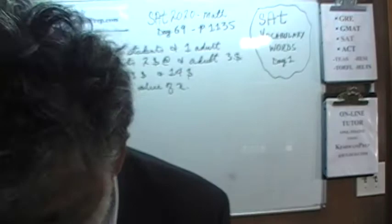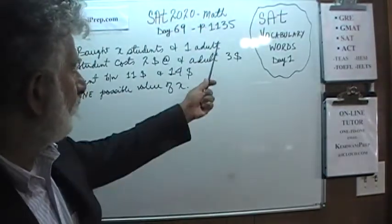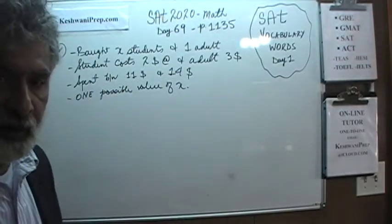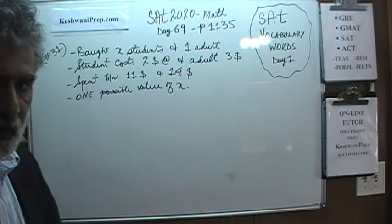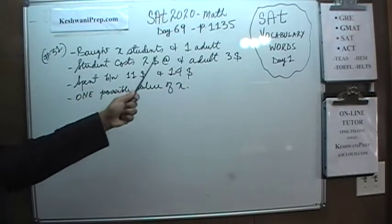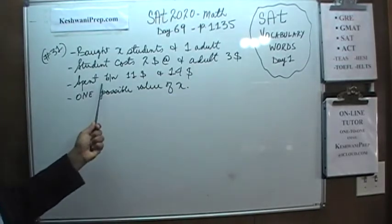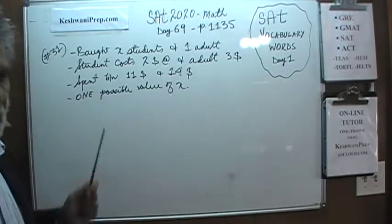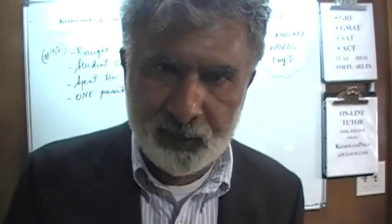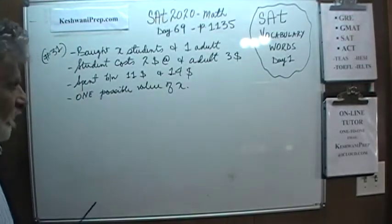Today we will solve some problems that you will find on page number 1135, problem number 1, very first problem on the page number 31 is already on the blackboard as you can see. Let's get going shall we? We are told that we are going to buy X students and one adult. Students cost $2, adults cost $3 and we are told that we are going to spend between $11 and $14.